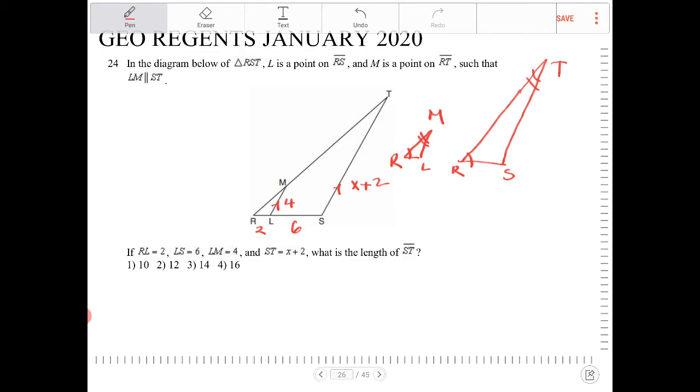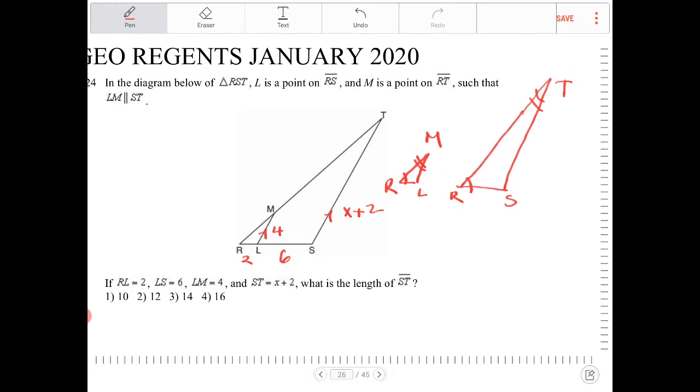I'm sorry, not alternate interior, corresponding angles. What am I saying? So these angles will end up being the same because of corresponding angles. This is going to be congruent to itself. Anyway.